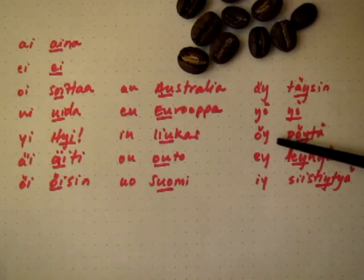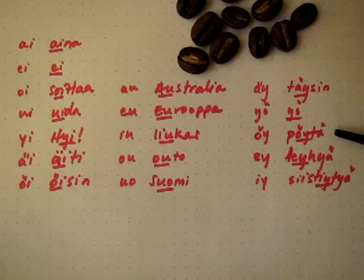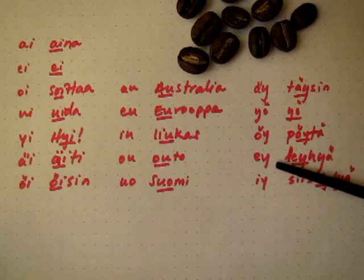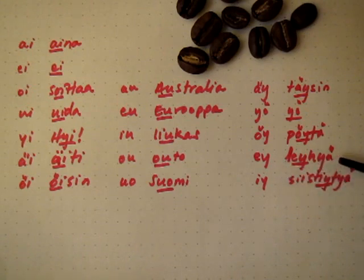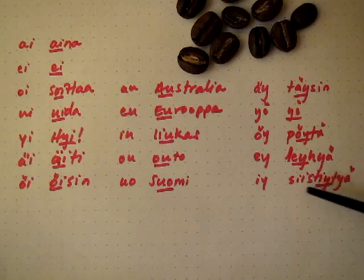Öy, öy, pöydä, pöydä. Öy, öy, löyhyä, löyhyä.